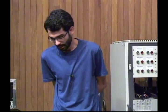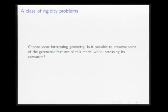I like to think about these problems the following way. You choose some geometry with special properties, and then you try to increase its curvature. But at the same time, you want to preserve some of the special geometrical properties of your model. Well, there are situations where you find obstructions. And if you cannot perform such a deformation, you can say your model is rigid in this sense.